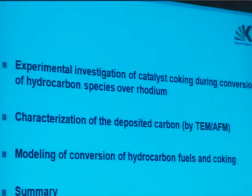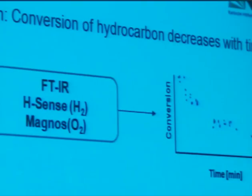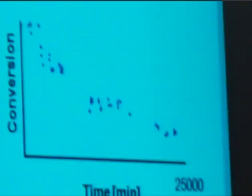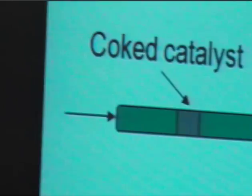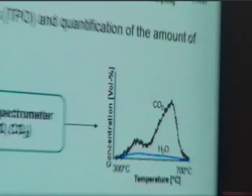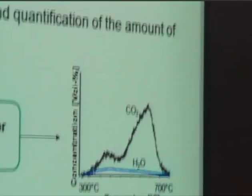There are different options for experimental investigations of catalyst coking. One possibility is to measure the conversion over time using methods like infrared spectroscopy to detect reactant species. Another approach is to burn off the carbon deposits and quantify the carbon amount deposited in different temperature regimes using temperature-programmed oxidation, which also provides kinetic information about coke formation.